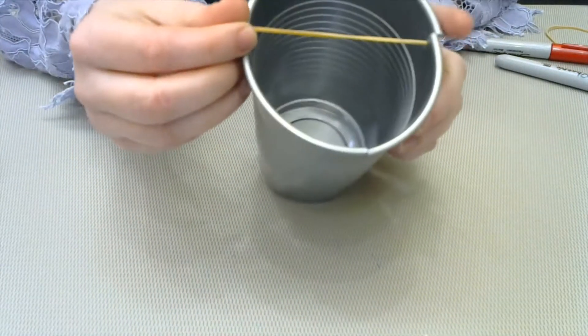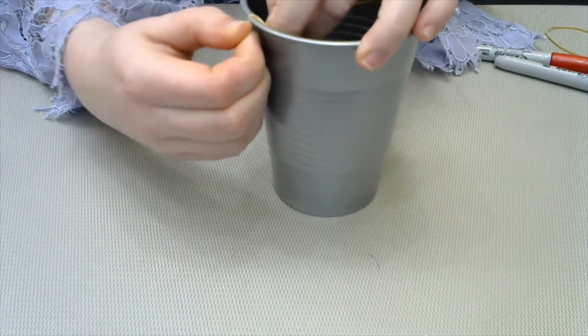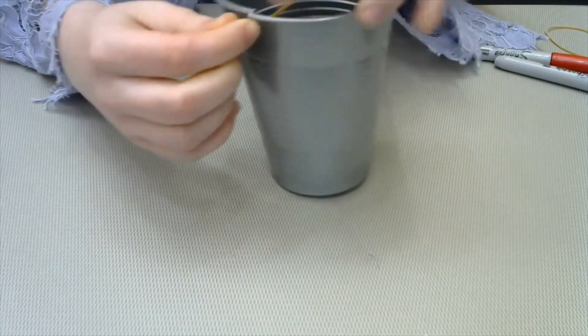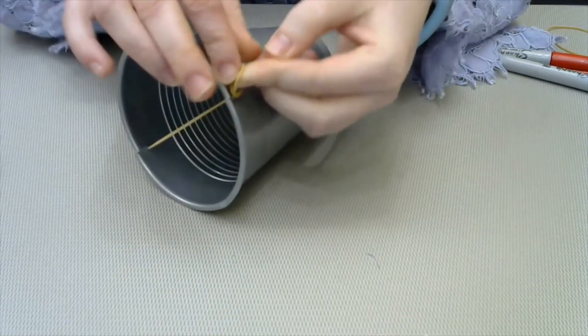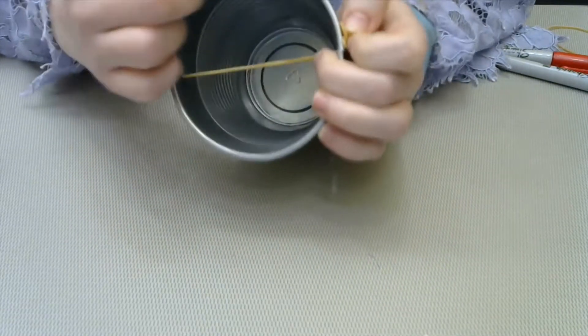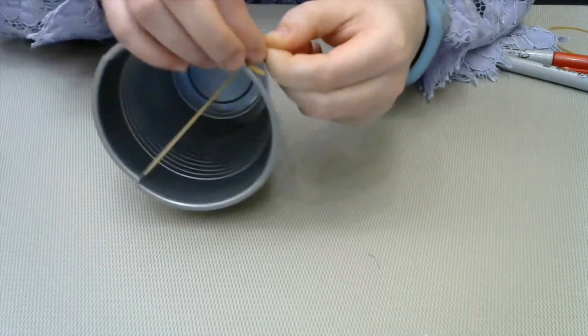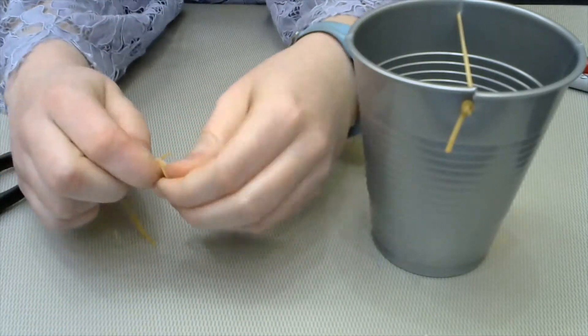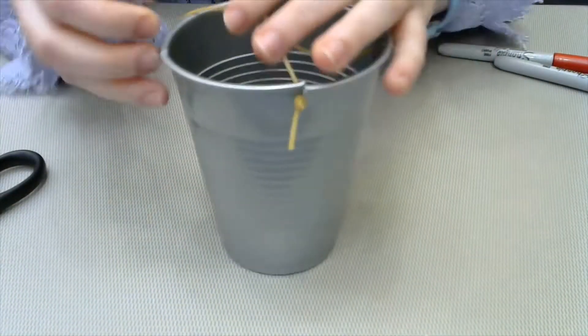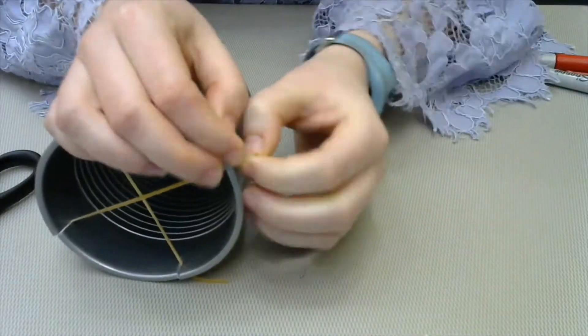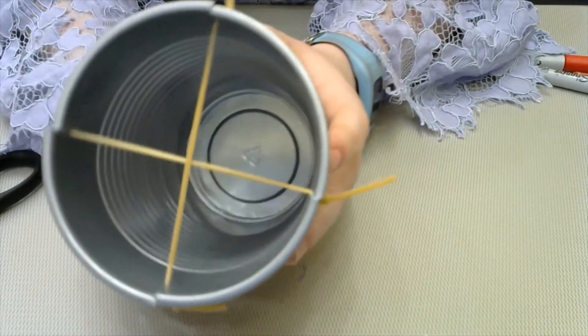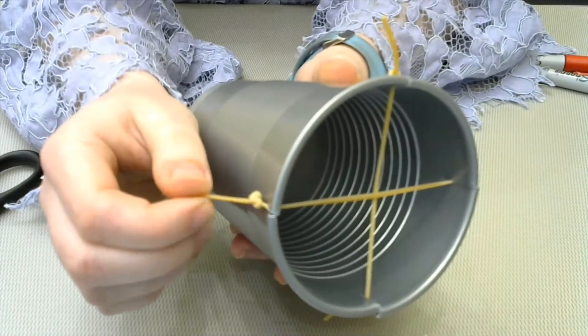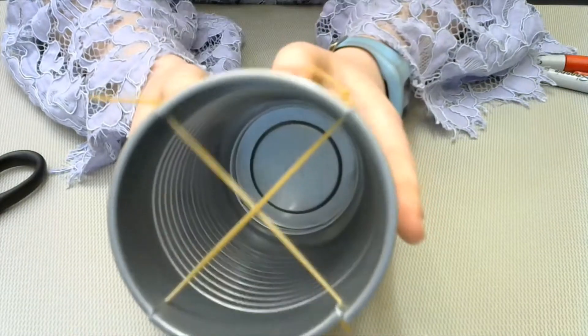And then you're going to stretch it across to the opposite side and slide it in as well. And you're going to make another knot so that the rubber band stays. And you'll do this again, stretching the other way as well. And there we go. We have our crisscross of rubber bands. If you want to cut off the excess rubber band, you're welcome to, but it's not necessary.